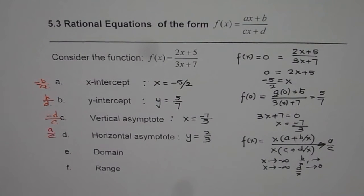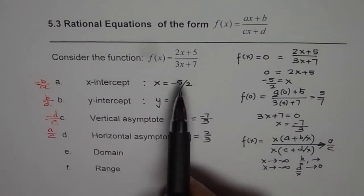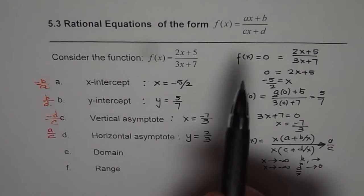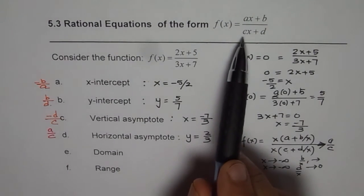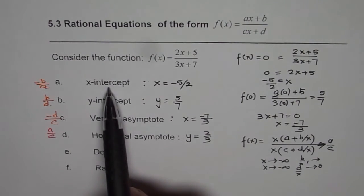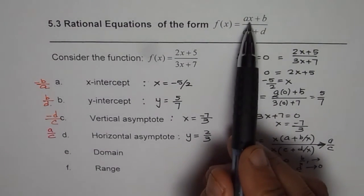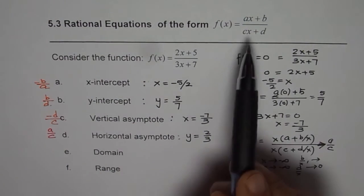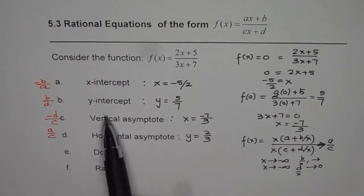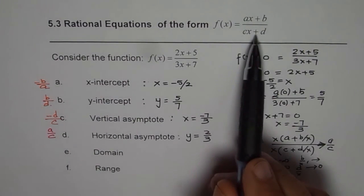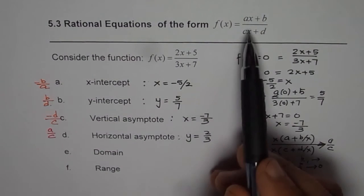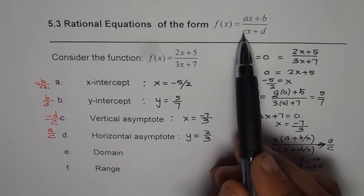Now these are the general characteristics which you can straight away read from this equation. And that is why we are discussing this equation in details. So if an equation is given in the form of ax plus b divided by cx plus d, you know x intercept is when numerator is 0, that is when x is minus b divided by a. Y intercept is when x is 0, so it is ratio of b and d. Vertical asymptote is when denominator is 0, so minus d divided by c. Horizontal asymptote is the ratio of these two leading coefficients, a over c.